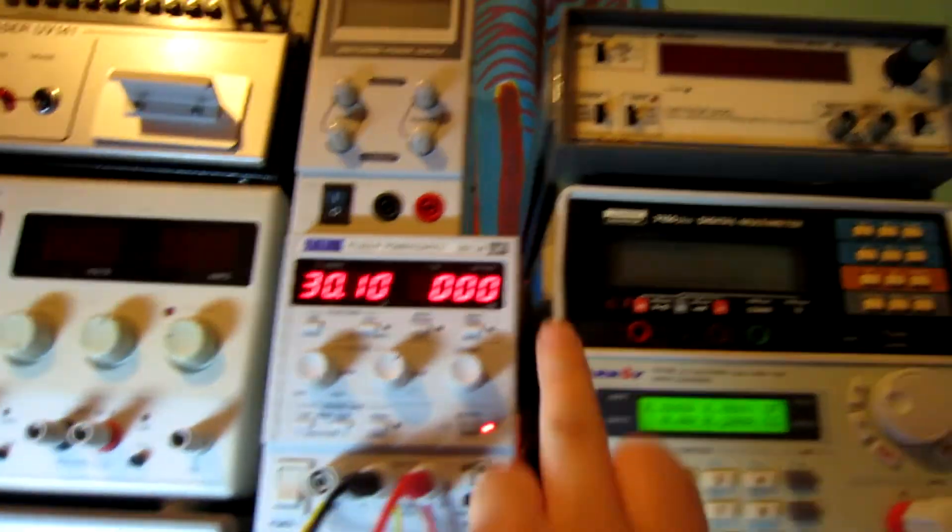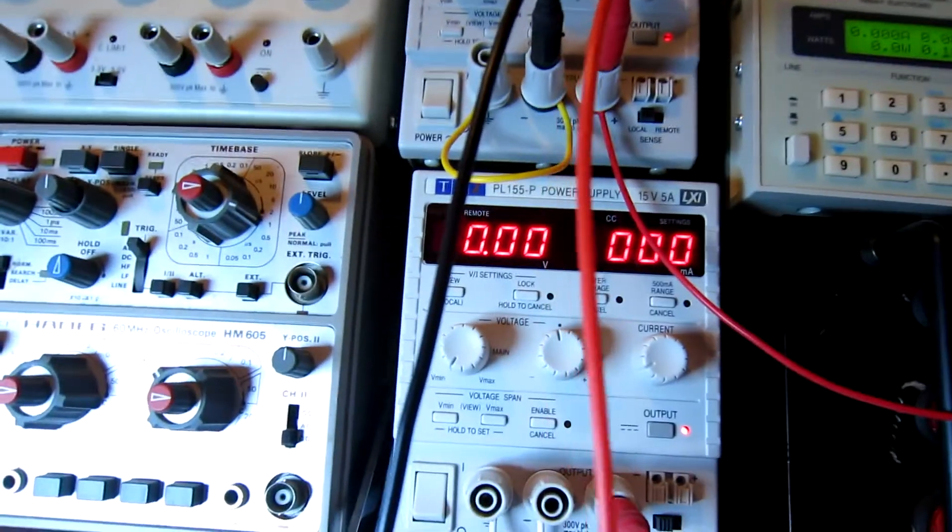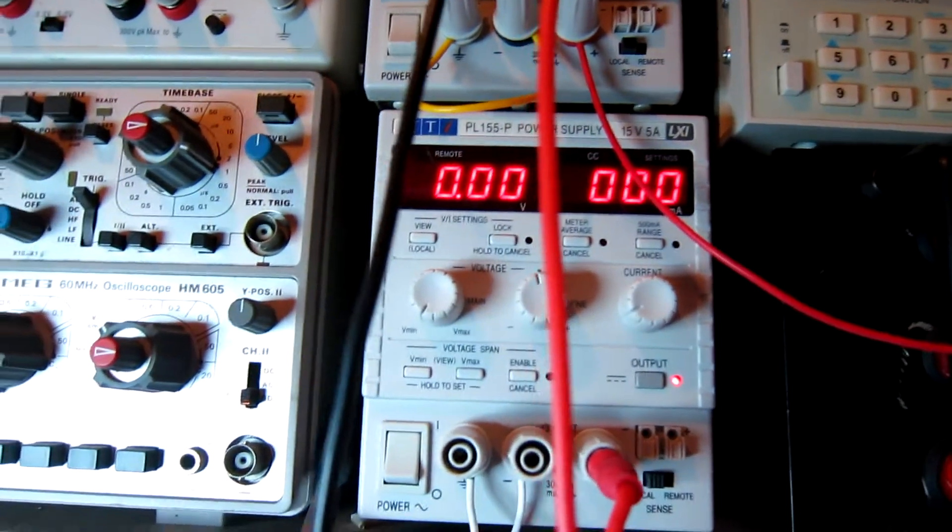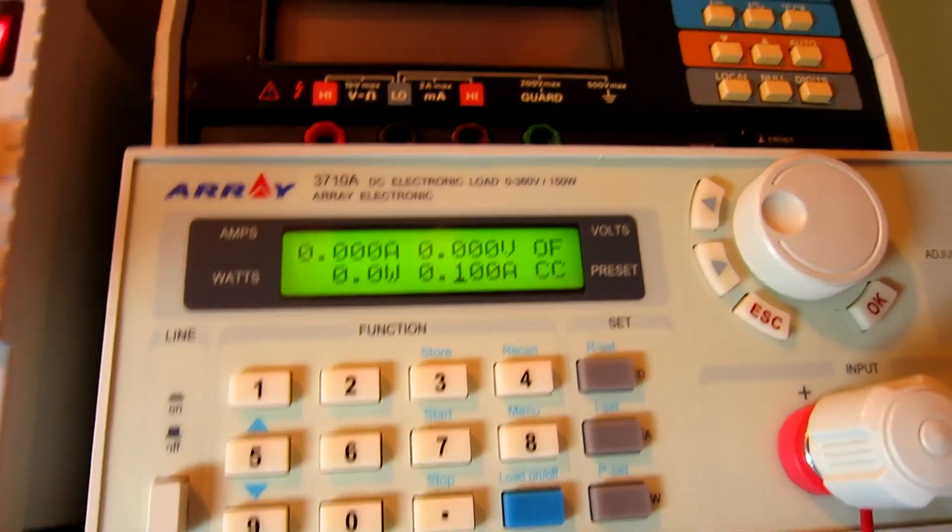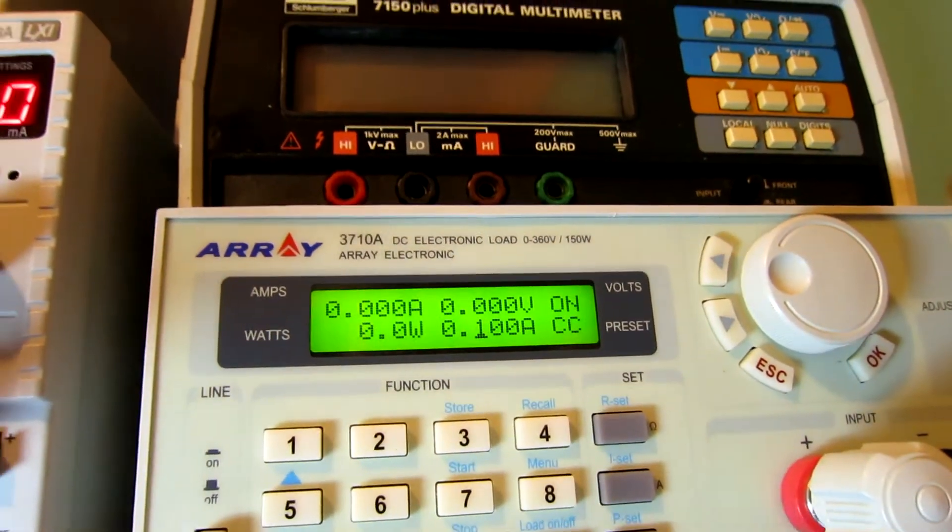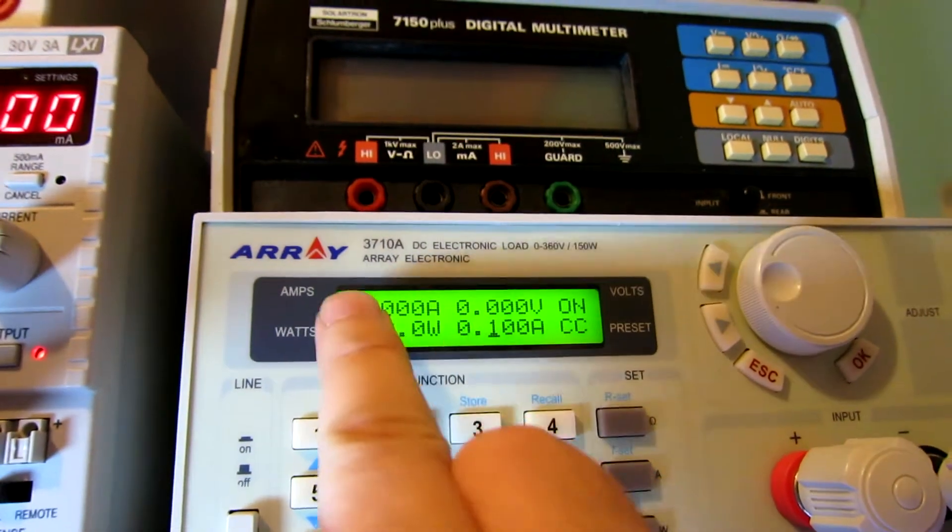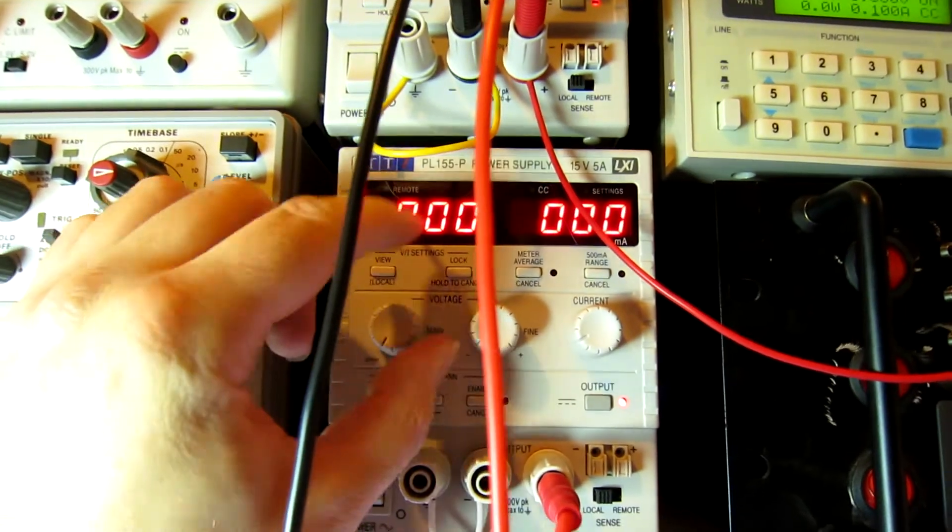Let's turn on our 30 volt supply. That is on, no current being drawn, nothing showing on the load tester. Next we turn on our gate supply, got it set to zero volts. Again, nothing on the load tester. We switch the load tester on, we've set it to 100 milliamps, nothing showing, so nothing's being drawn.